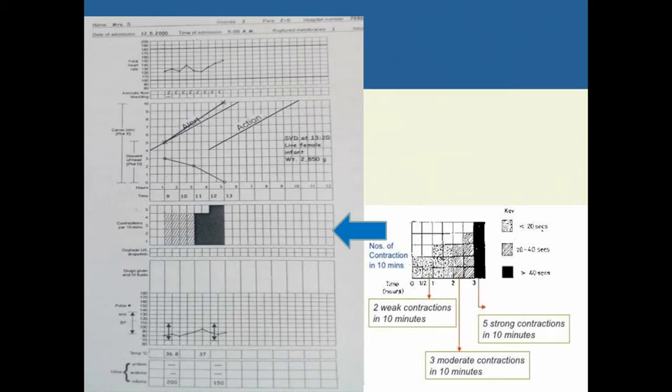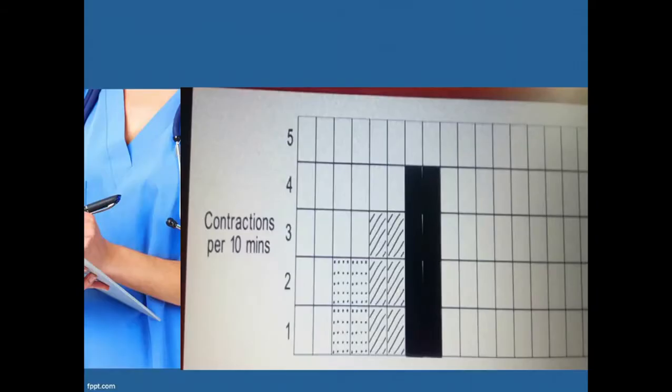This is how the markings for contractions are made on the partograph — contractions per 10 minutes, recorded every half hour.